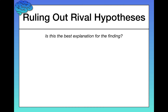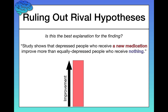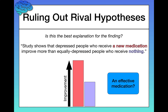For example, let's say you're on Twitter, Facebook, or whatever, and you see this headline: 'A study shows that depressed people who receive a new medication improve more than equally depressed people who receive nothing.' If you were depressed, would you be convinced by these results? Would you go out and buy this medication? I would argue that this is very poor evidence for the effectiveness of the medication.